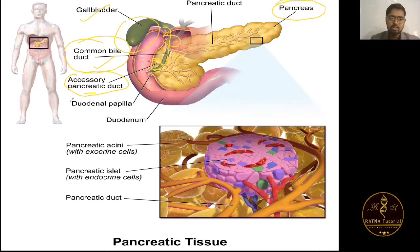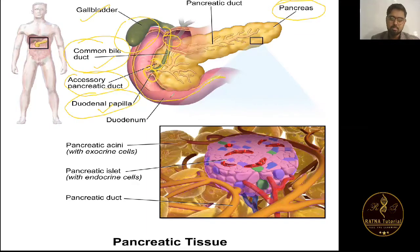This part is the duodenal papilla — the opening where the gall bladder, common bile duct, and pancreatic duct all open. This complete structure is the duodenum, which is the first part of the small intestine.